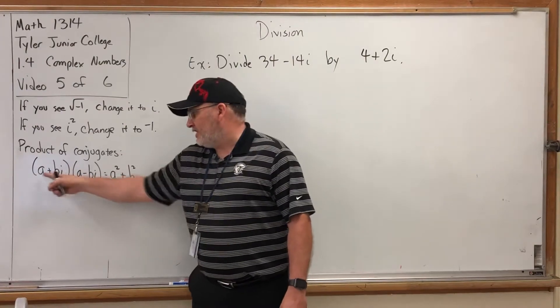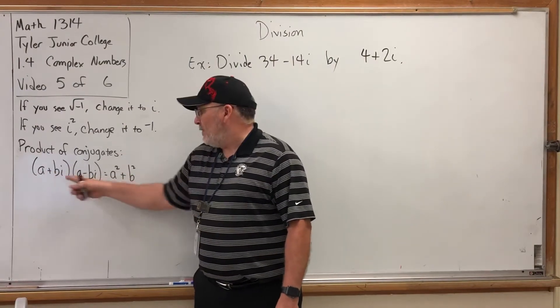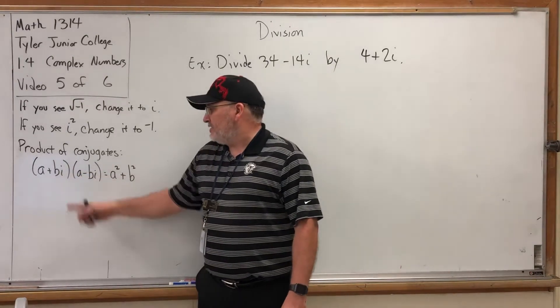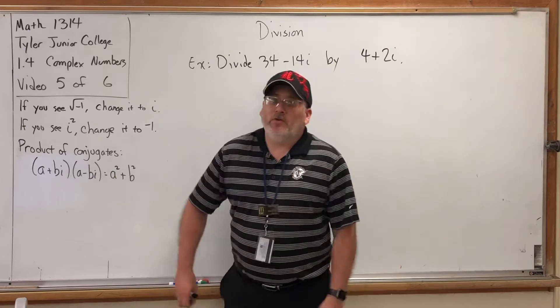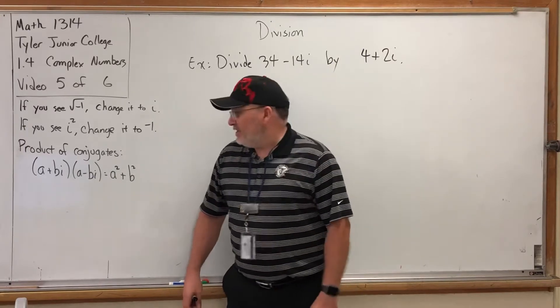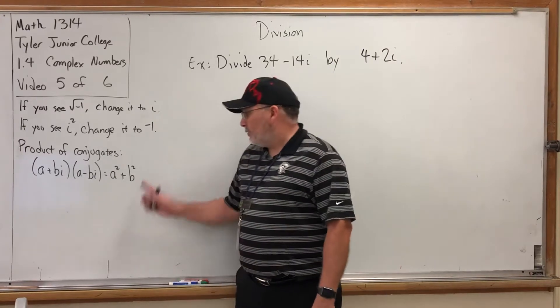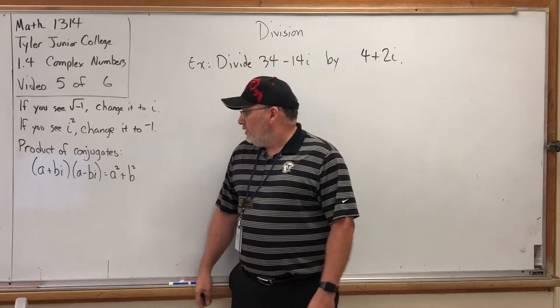In this case they're both a, and whose imaginary parts are opposites—in this case positive bi and negative bi. A desirable property of conjugates is when you multiply them the product is real.